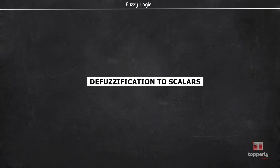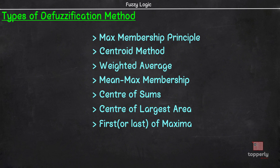Hey everyone, welcome back to Fuzzy Logic Lectures. In the past few videos, we were learning about the various defuzzification methods, and so far we learned about max membership principle, centroid method, weighted average method, mean max membership principle, center of sums, and center of largest area. In this video, we will see the method of first or last of maxima, and after that we will also briefly discuss how to choose the defuzzification method that should be used for an application. So let's start our lecture.